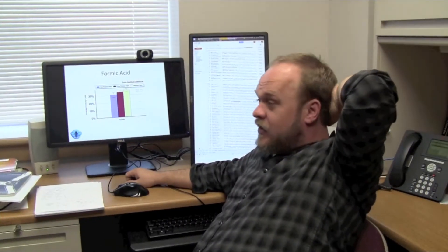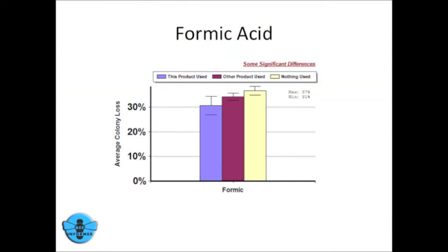Formic acid is an active ingredient in many products that were on the market last year. We can see that people who reported using formic acid lost fewer colonies than those who did not report using any varroa mite control product at all.